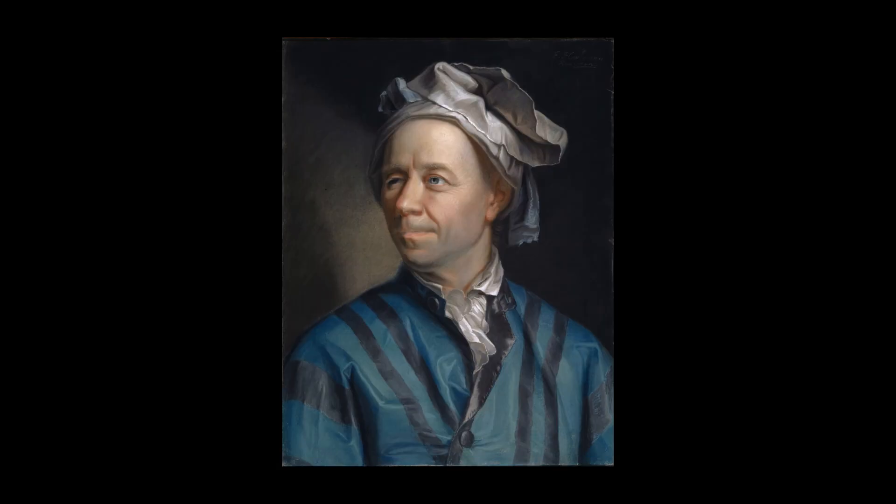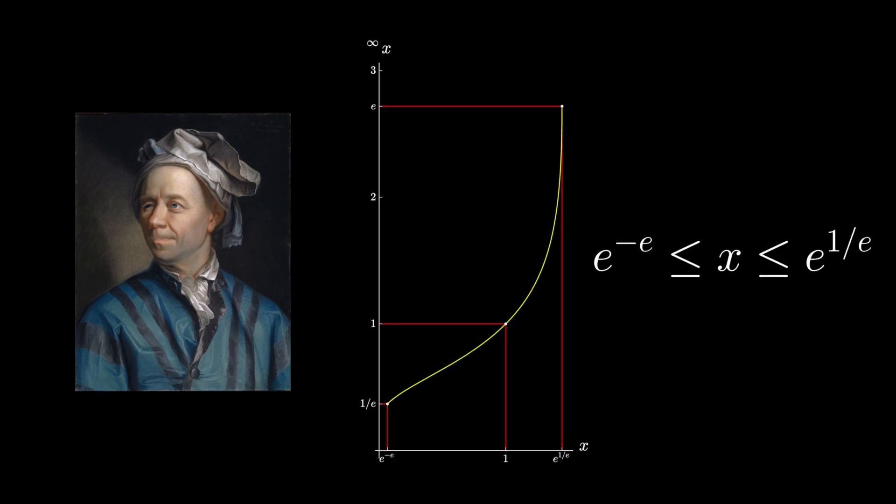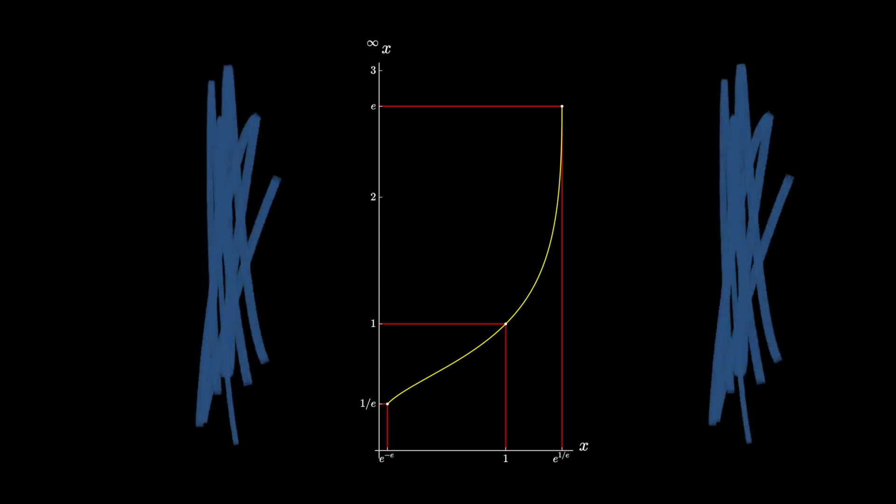In fact, the famous mathematician Leonard Euler showed that the infinite power tower, or Tetration with infinity, converges when the base is between e to the minus e and e to the 1 over e. Outside of that range, you're pretty much out of luck.